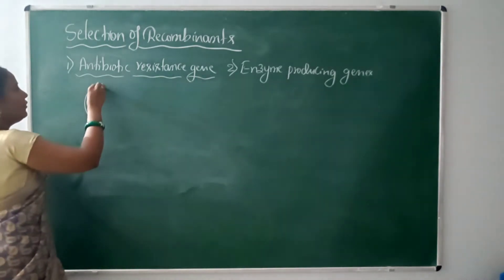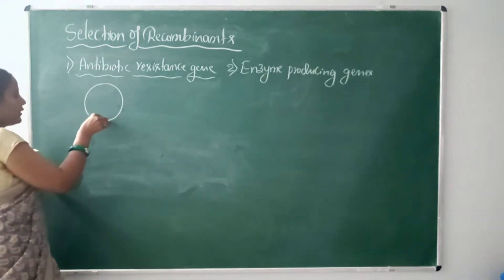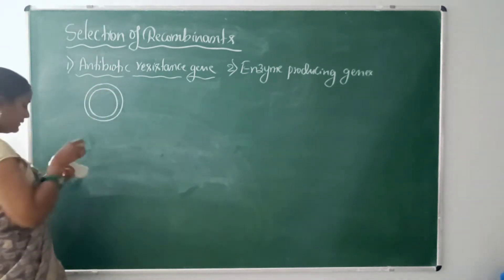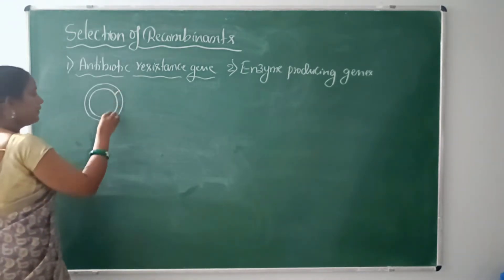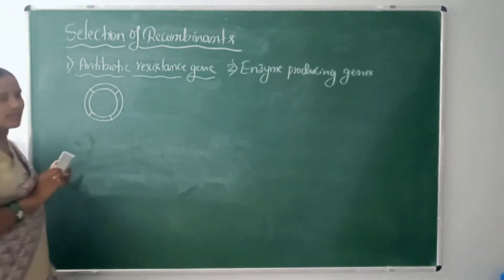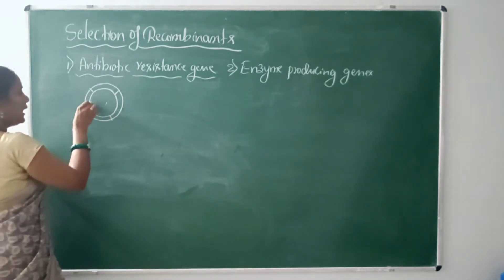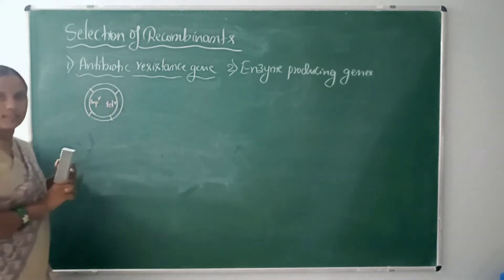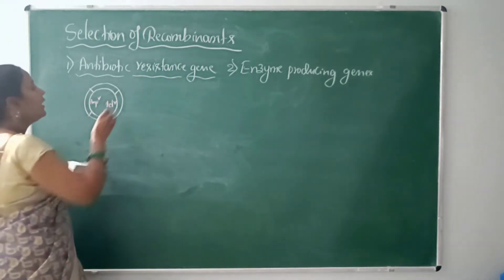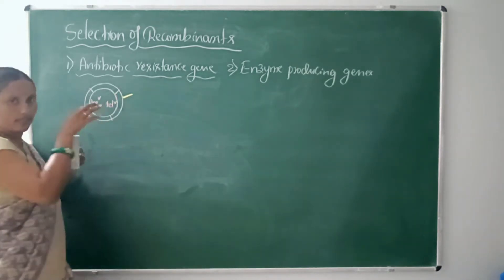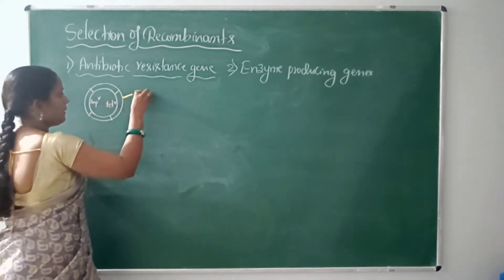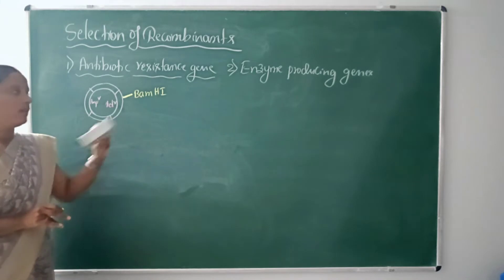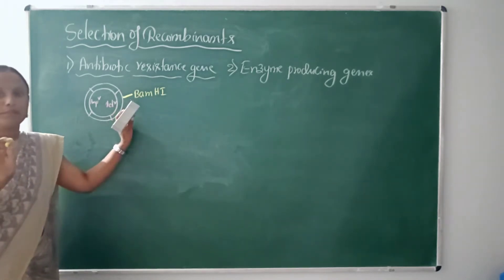Suppose I take the example of pBR322 vector. As we discussed earlier, it has restriction sites on selectable marker genes — an ampicillin-resistant gene and a tetracycline-resistant gene. And here is the cloning site, where it is possible to attach the gene of our interest. The BamH1 restriction site is here.